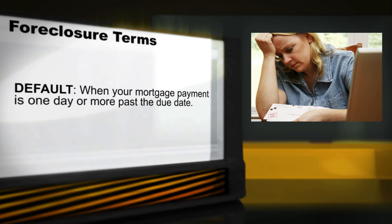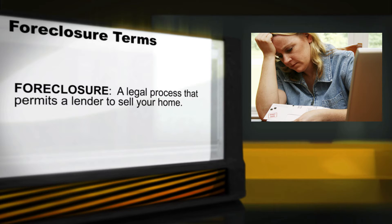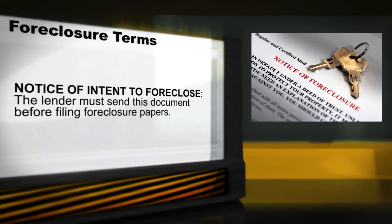Now, let's define some terms used throughout the process. When your mortgage payment is one day or more past the due date, your loan is said to be in default. The term foreclosure refers to a legal process that permits a lender to sell your home. Usually, after a delinquency letter has been sent, the first official notice you will get from the lender is a notice of intent to foreclose. The lender must send you this document before filing any foreclosure papers with the court.